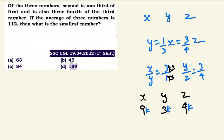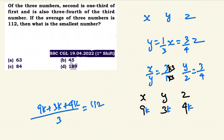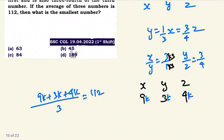So the numbers are 9k, 3k, 4k. If the average of the three numbers is 112, then 9k plus 3k plus 4k divided by 3 equals 112. That gives 16k divided by 3 equals 112, so k is a real value. The number one is equal to 3k — so the smallest number is 3k = 36.